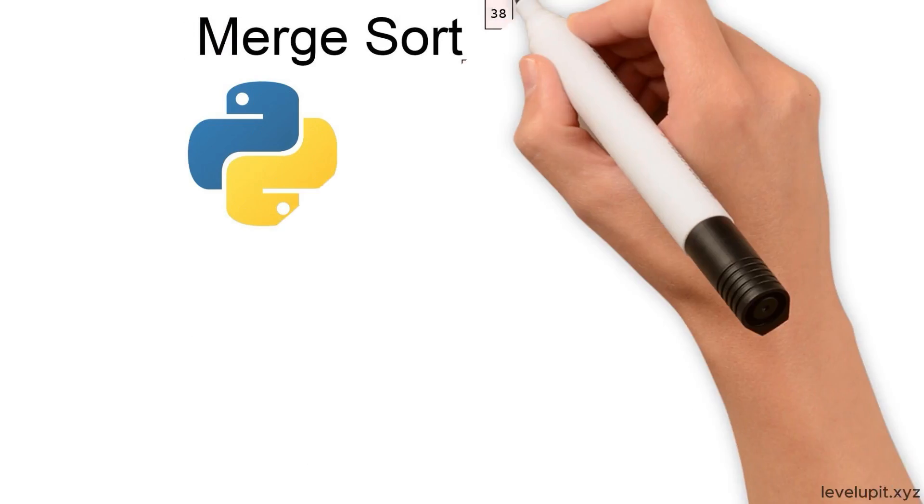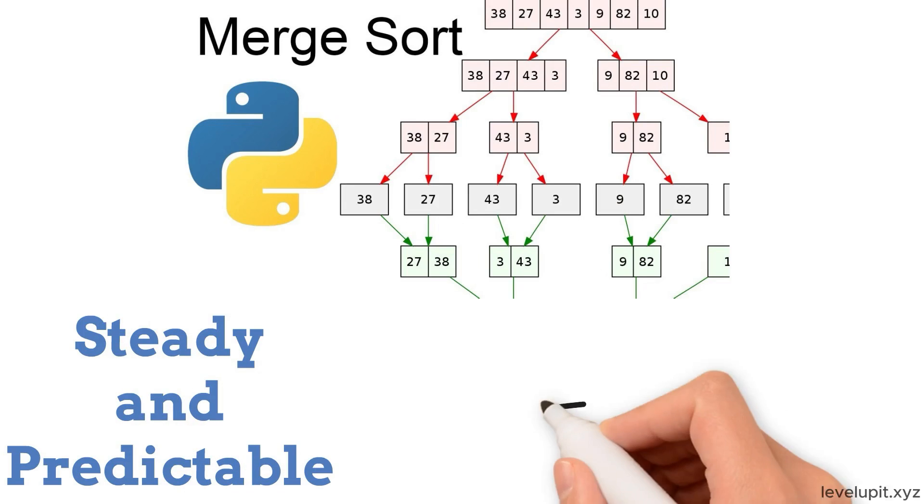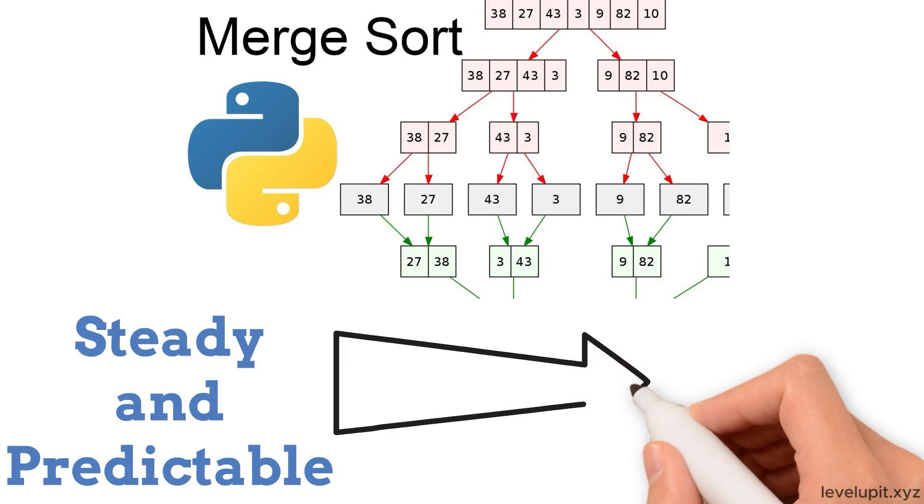Merge sort is steady and predictable. Great when consistency matters. The trade-off: it uses extra space while merging.